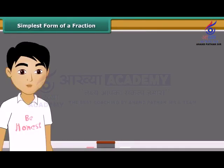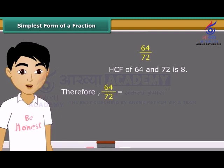Students, the second method to find the equivalent fraction in the simplest form is to find the HCF of the numerator and denominator and then divide both of them by the HCF. Consider fractions 64 upon 72. The HCF of 64 and 72 is 8. We get new fraction 8 upon 9 on dividing the numerator and denominator both by HCF.